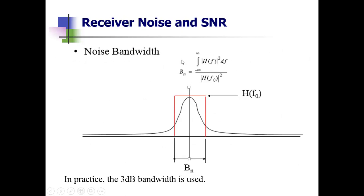This is called the noise bandwidth, with the expression: Bn = integral from minus infinity to infinity of |H(f)|² df divided by |H(f₀)|². Here H(f₀) is the frequency response function at the mid-band frequency f₀, which is the frequency of maximum response. H(f) is the frequency response function of the IF amplifier or IF filter stage including the matched filter.